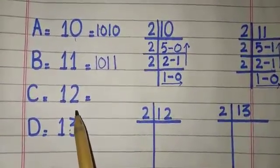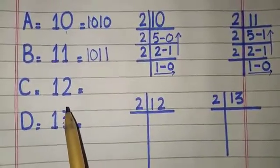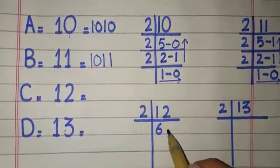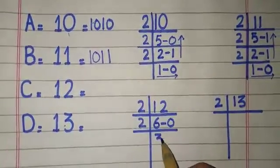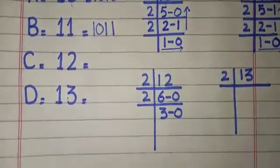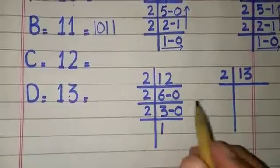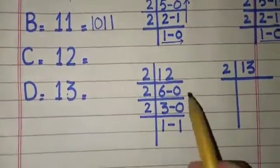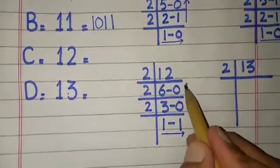C is equal to 12. Now, we have to check 12 in the binary number system. 12 divided by 2 gives 6, remainder 0; 6 divided by 2 gives 3, remainder 0; 3 divided by 2 gives 1, remainder 1; 1 divided by 2, remainder is equal to 1. So in binary number system, 12 is equal to 1100.